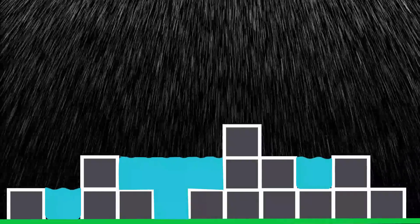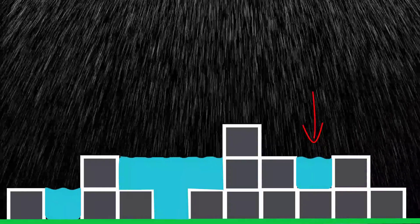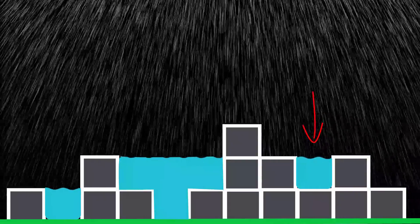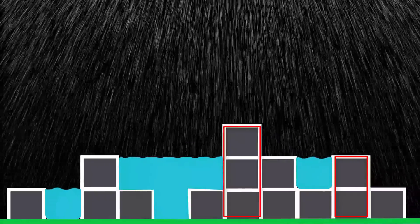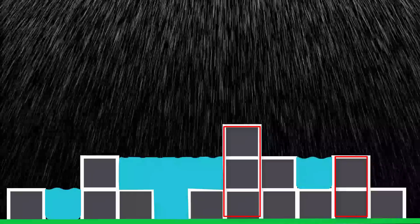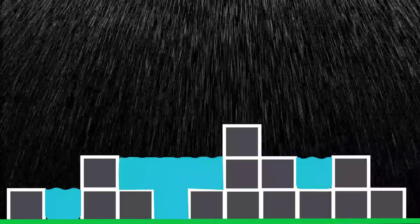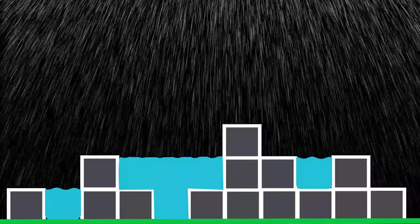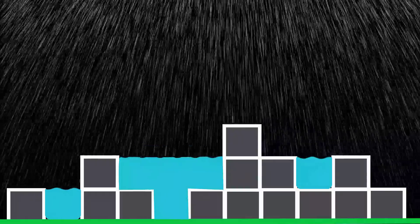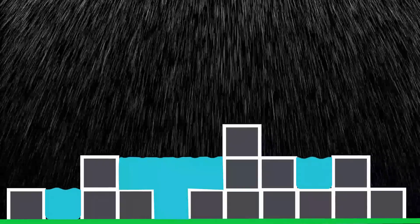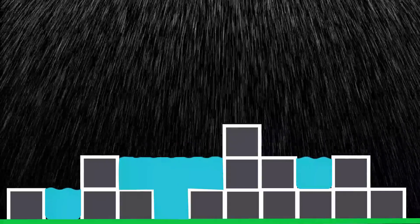Let's quickly take another example. Let's take the ninth index. You'd notice that the longest building to its right is of height 2 and the longest building to its left is of height 3. The minimum of both is 2, so the total height at index 9 should be 2. However, since there's a building at index 9 of height 1, the total water stored there should be 1 unit to make the total height 2.